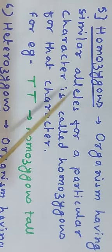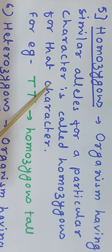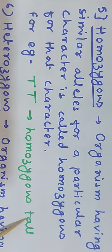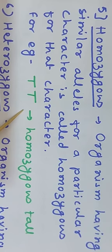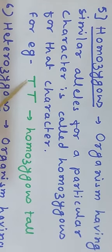An organism having similar alleles for a particular character is homozygous. For example, for height, capital T capital T — both genes are the same — so that individual is called homozygous.